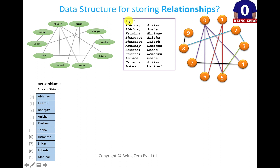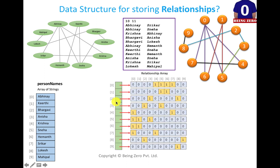There are 10 vertices here, so we can take a 10 by 10 2D matrix. As you can see, 0 to 9 are rows and 0 to 9 are columns — this is a 10 by 10 matrix.